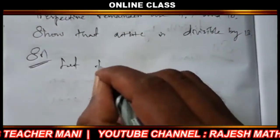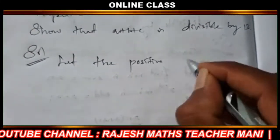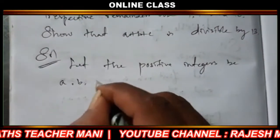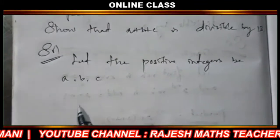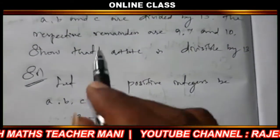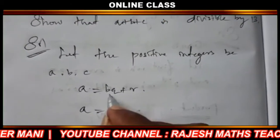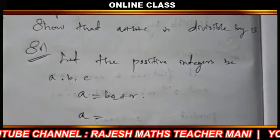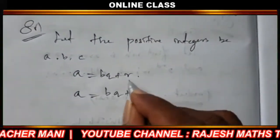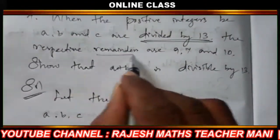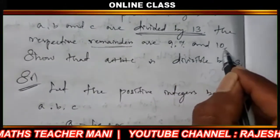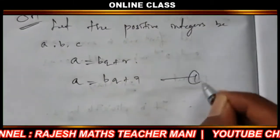So here we are going to use the Euclidean lemma formula. Let the positive integers be a, b, c. We use the form a equal to bq plus r. Here, a is equal to 13q plus remainder. The remainder of a is 9, remainder of b is 7.